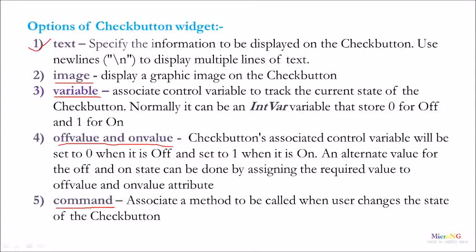The fifth option is Command. It is used to associate a method to be called when the user changes the state of the CheckButton. So there are five important options of the CheckButton Widget: Text, Image, Variable, OFF value and ON value, and Command.